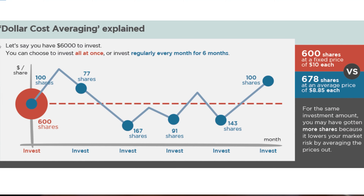Let's take an example. Let's say you have six thousand dollars to invest. You have two options: you can choose to invest it all at once, or invest in six equal increments of a thousand dollars each over six months. We get a lot of people asking: I have a chunk of money — is it good to just throw it in all at once or spread it out over a few months?